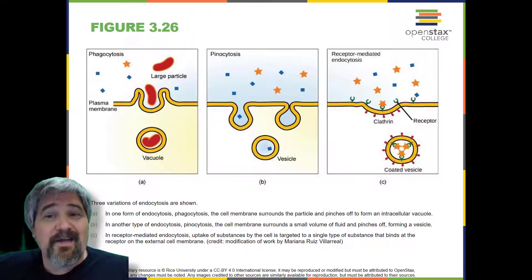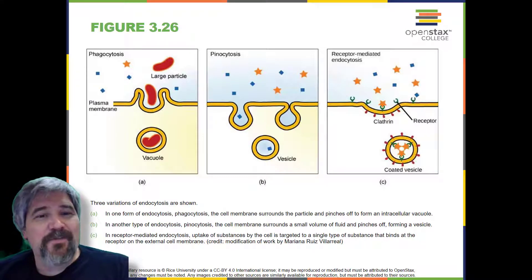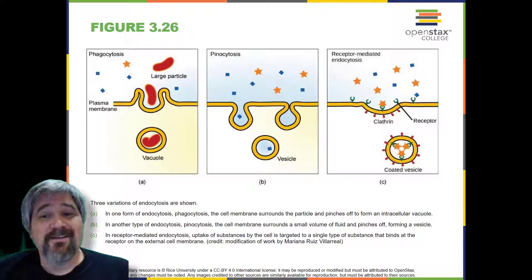A variation of endocytosis is called pinocytosis. This literally means cell drinking, and was named at a time when the assumption was that the cell was purposefully taking in extracellular fluid. In reality, this process takes in solutes that the cell needs from the extracellular fluid.